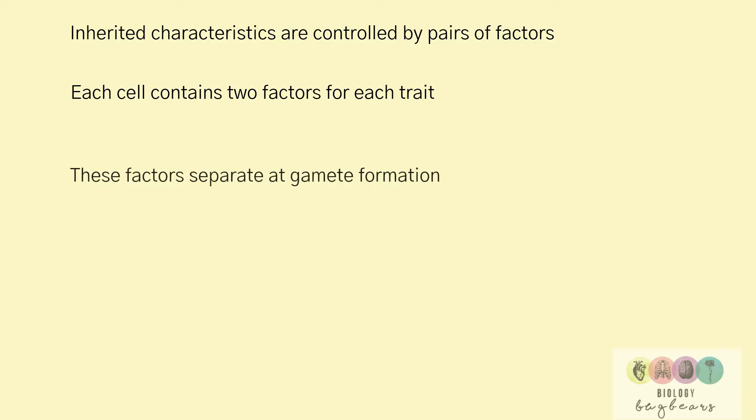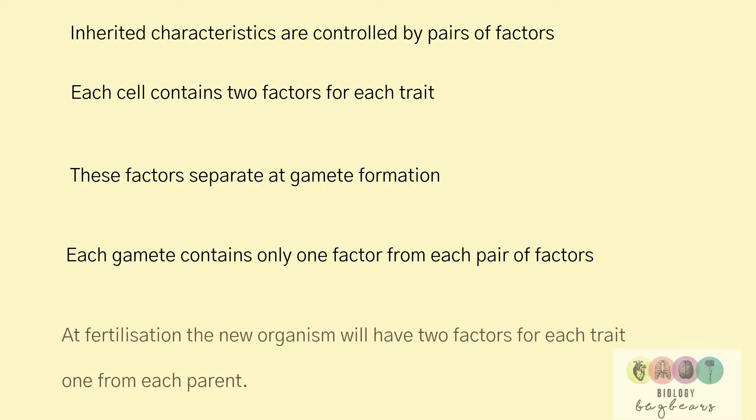This law states that inherited characteristics are controlled by pairs of factors. Each cell contains two factors for each trait. These factors separate at gamete formation. Each gamete contains only one factor from each pair of factors. At fertilization, the new organism will have two factors for each trait, one from each parent.